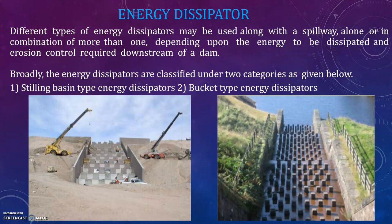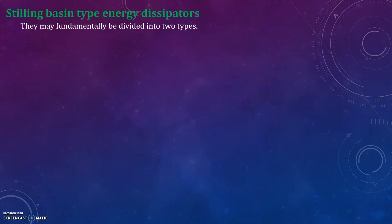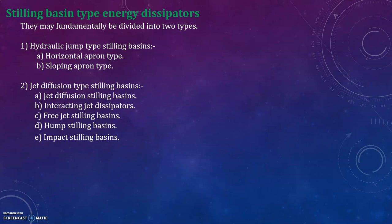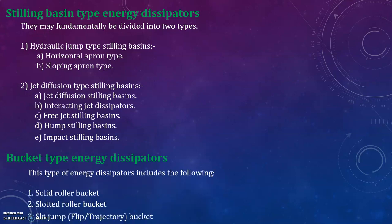Broadly, energy dissipators are classified under two categories: stilling basin type energy dissipators and bucket type energy dissipators. Stilling basin type may be divided into hydraulic jump type stilling basins — horizontal apron type and sloping apron type — and jet diffusion type stilling basins, which include interacting jet dissipators, free jet stilling basins, hump stilling basins, and impact stilling basins. Bucket type energy dissipators have three types: solid roller bucket, slotted roller bucket, and ski jump or flip bucket.